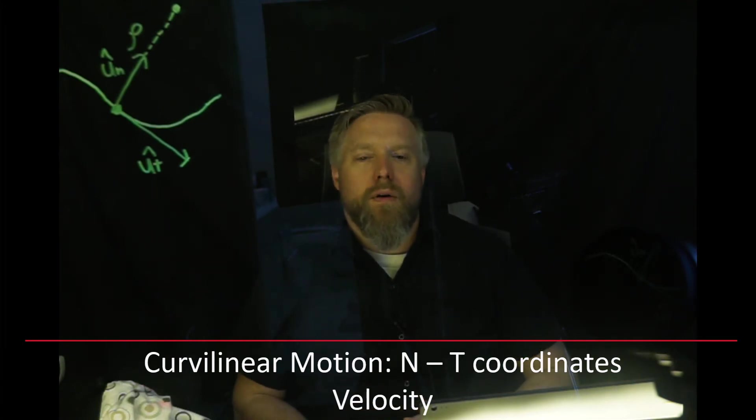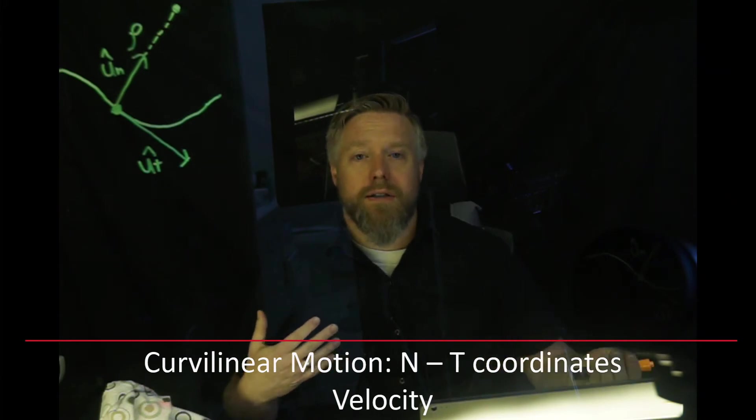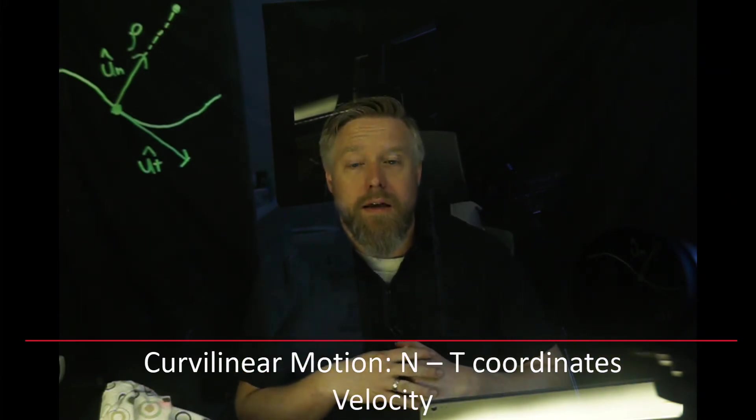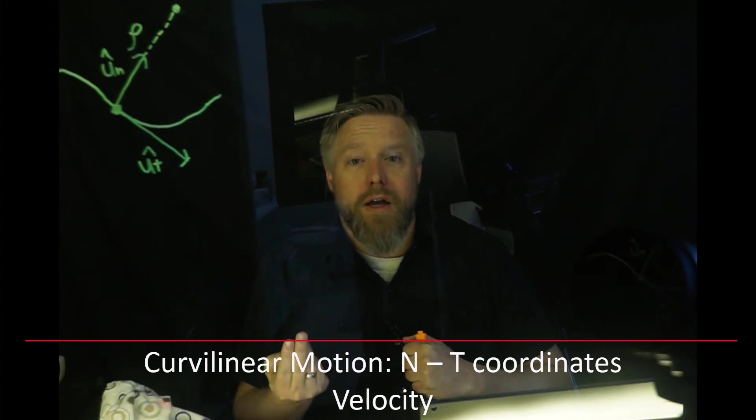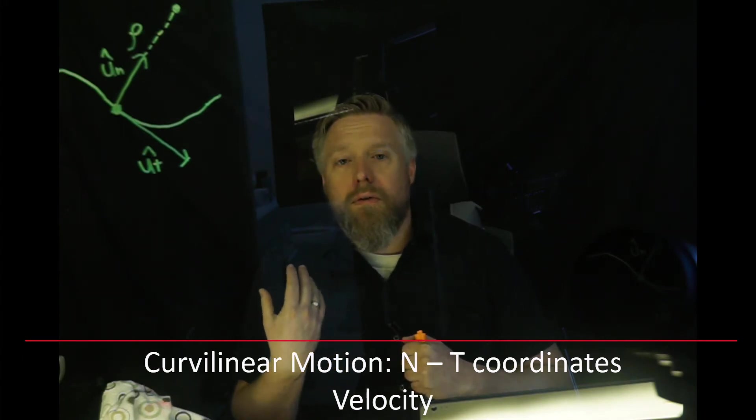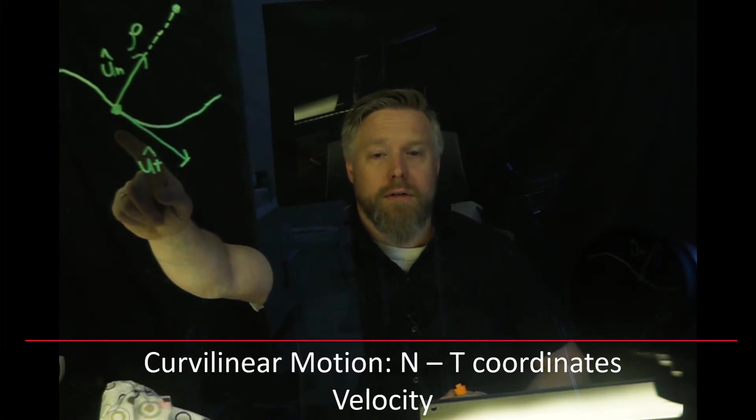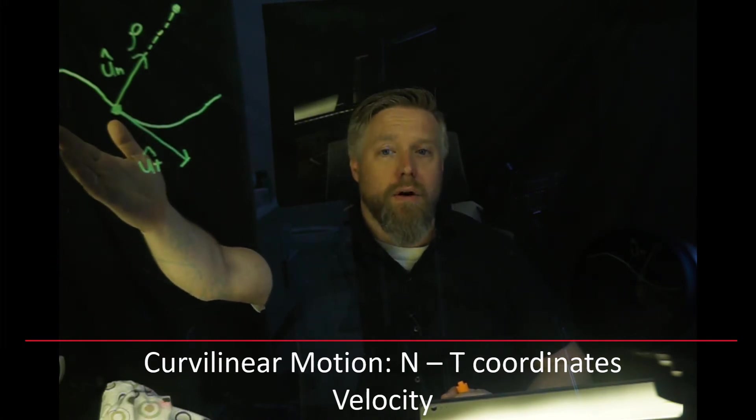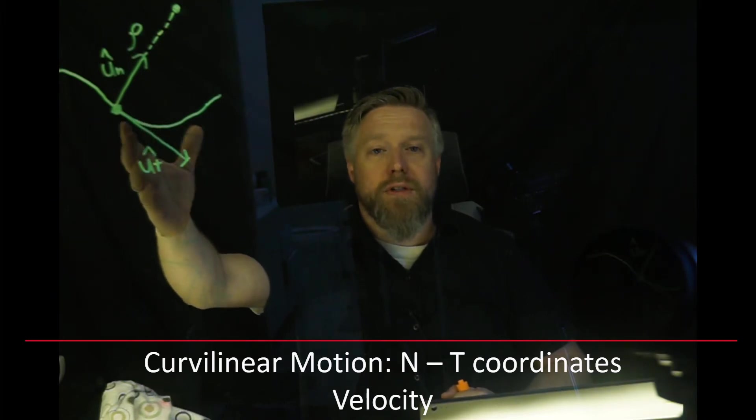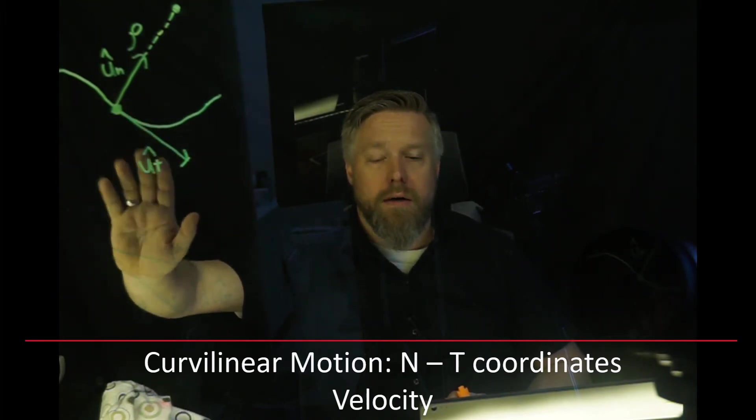Perpendicular to that and pointing towards the instantaneous center of curvature is our UN. That's pointing towards what would be the center of a circle that would approximate that arc, and you can label the radius of that circle as rho. So we've set up our UT and our UN axis. Now what we want to do is figure out what are the coordinates in the UT and the UN. For position, what is the distance between the origin and our particle for normal tangential? It's zero because our origin is always on the particle. So for position we don't have a vector, zero UT, zero UN.